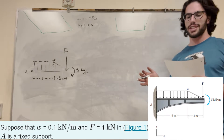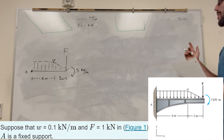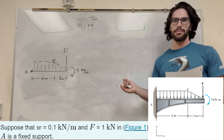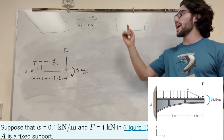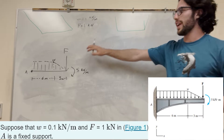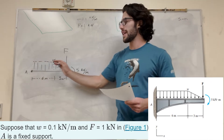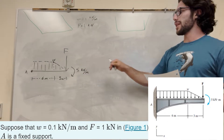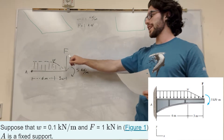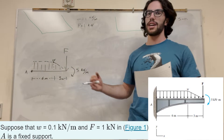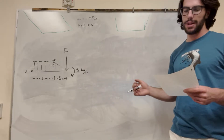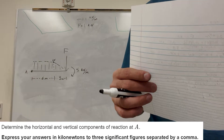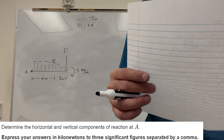What's up Kyle gang. Alright, so we got this problem here 5.15. We've got this beam, and we know that the weight of this area is 0.1 kilonewtons per meter, and then we have this force acting, and we know that its moment is 5 kilonewton-meters.